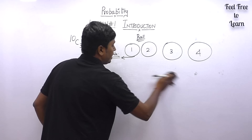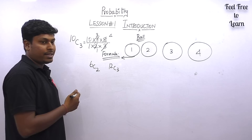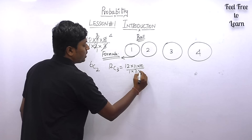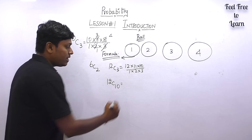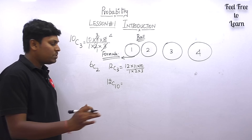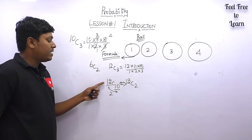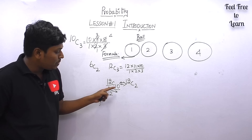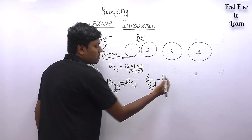There is an exceptional case: if you have something like 12C10, you don't want to reduce 12 ten times. Instead, subtract: 12 minus 10 equals 2, so 12C10 is the same as 12C2. Similarly, 6C4 equals 6C2 because 6 minus 4 equals 2. This shortcut saves a lot of calculation.